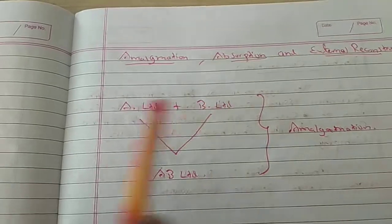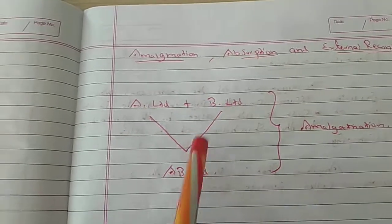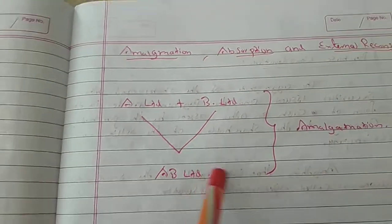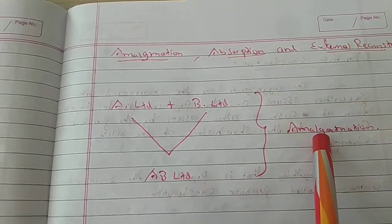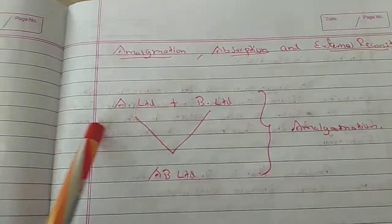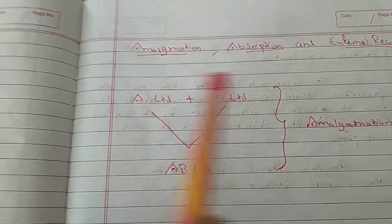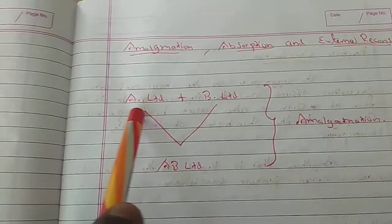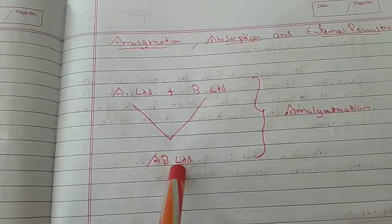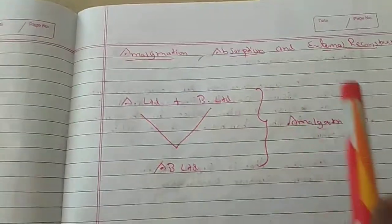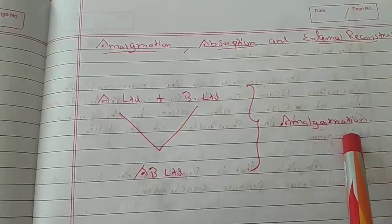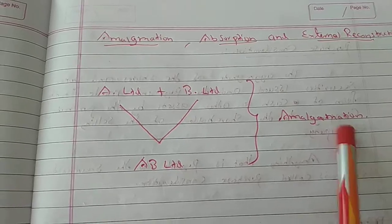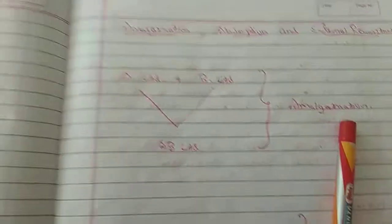So in Amalgamation, two companies — say A company and B company — come together and form one new company, an Amalgamation. So this case is not an issue, right?